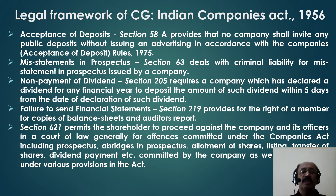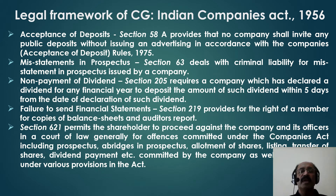Non-payment of dividend under Section 205 requires a company which has declared a dividend to deposit the amount within five days from the date of declaration. Failure to send financial statements — Section 219 provides for the right of a member to copies of balance sheets and the auditor's report. Section 621 permits the shareholder to proceed against a company and its officers in a court of law for offences committed under the Companies Act, including wrong prospectus, allotment of shares, listing, transfer of shares, and dividend payment.